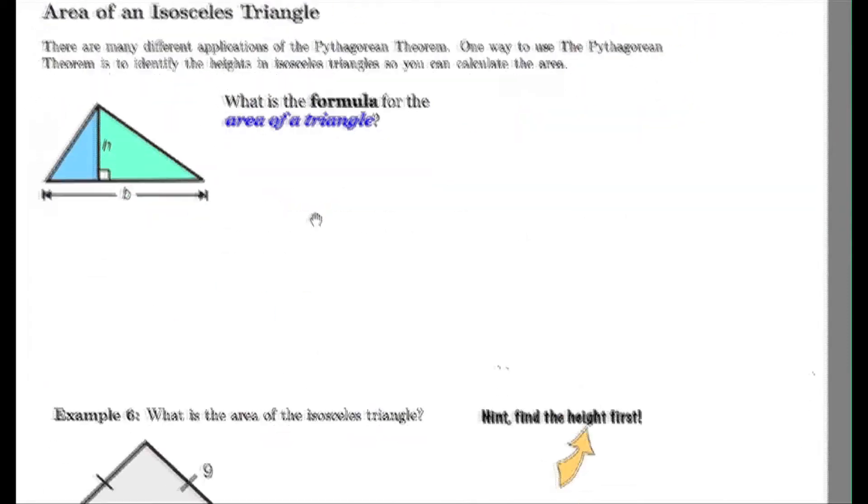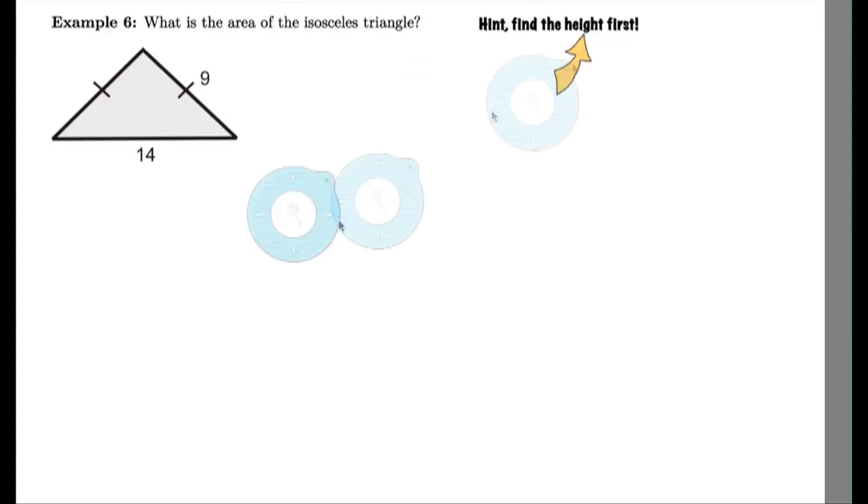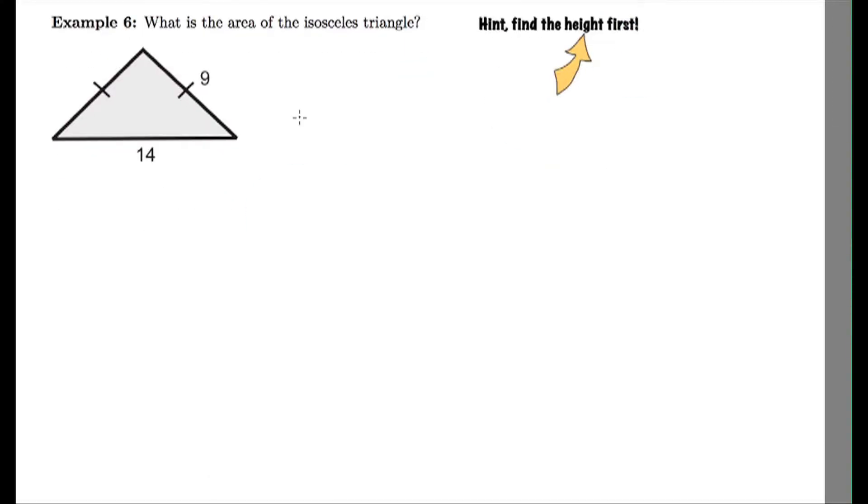Okay, so let's see how we can use the Pythagorean theorem with finding area of an isosceles triangle. So we know that area equals one half base times height, and that the base and the height must form a 90 degree angle with respect to each other in order to find the area, in order to use these dimensions to get the area. So in example 6 we have an isosceles triangle. Now I have a dimension for the base, it's 14, but 9 isn't the height.